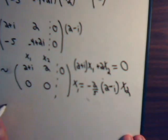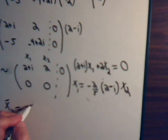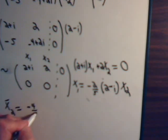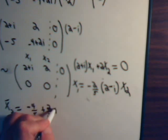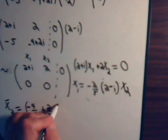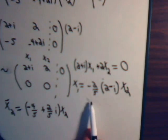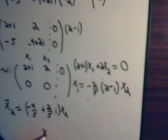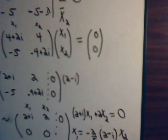So, our second eigenvector, x1 is minus, multiply across, we have minus 4 fifths, plus 2 fifths i times x2. That's what x1 is. And then we also have x2. Two components, x1 and x2, x2 is just a free variable.